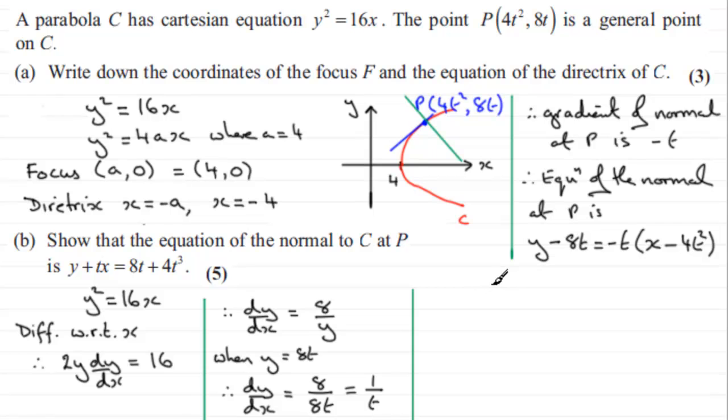Okay. And so, therefore, if we start to expand this, let's just copy down the left-hand side. y minus 8t equals, we expand this and we get minus tx, and then we get plus 4t cubed.